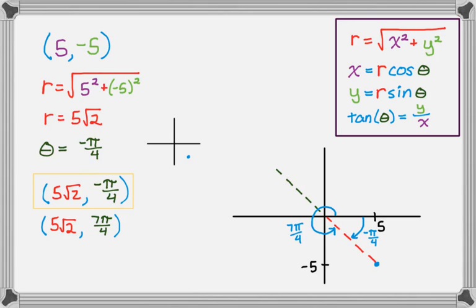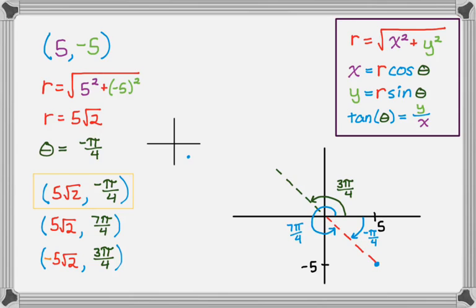Polar coordinates are not unique — that's already two ways of doing it. What if I only rotate 3π/4? That points into the second quadrant, but I need to end up in the fourth quadrant. If I rotate 3π/4, I can make R negative: so (-5√2, 3π/4) also puts me at the Cartesian point (5, -5). That's three different representations of the same point, and all of them are valid.